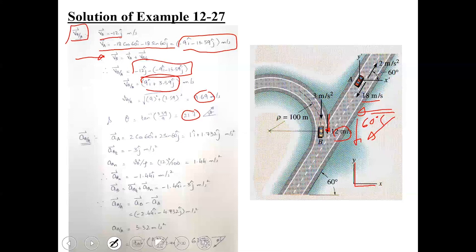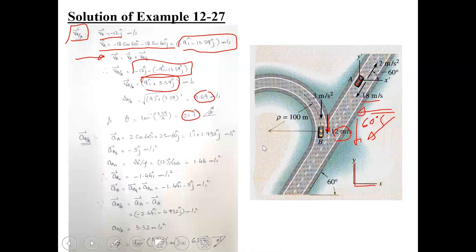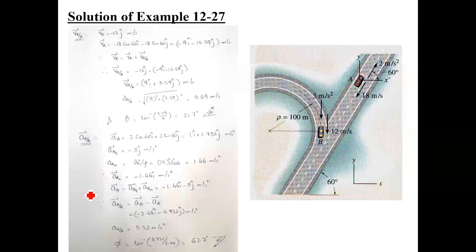The relative velocity of B with respect to A is similar to the problem solved previously. Now moving to the acceleration of B with respect to A. Particle B is travelling along a curved path, so its total acceleration is the vector sum of tangential and normal components. Starting with the acceleration of car A, it is decelerating at 2 meters per second squared. Resolving into x and y components gives positive contributions: 2 cos 60 i plus 2 sin 60 j.